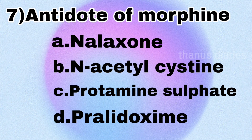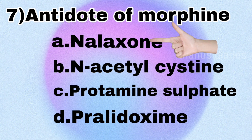Next question: the antidote of morphine is — naloxone, N-acetylcysteine, protamine sulfate, or pralidoxime? The antidote of morphine is naloxone.